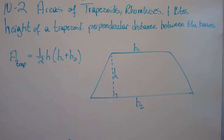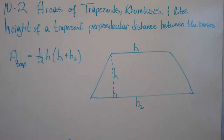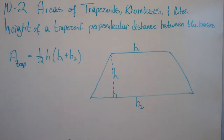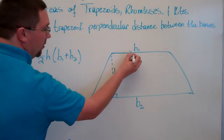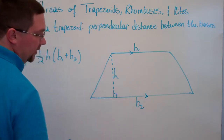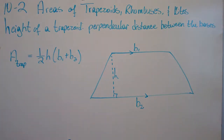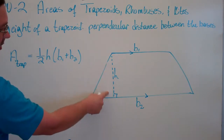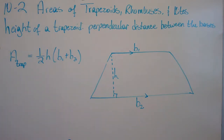Your only vocab term for this video is height of a trapezoid, which is the perpendicular distance between the bases. Here we have a trapezoid with base 1 and base 2. The bases are the two parallel sides, so the perpendicular distance between the two bases is the height.